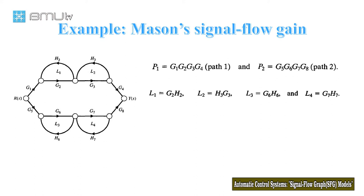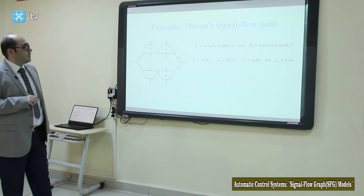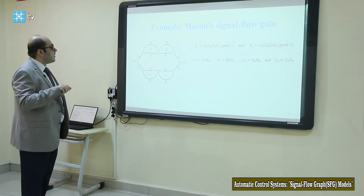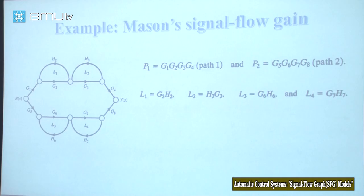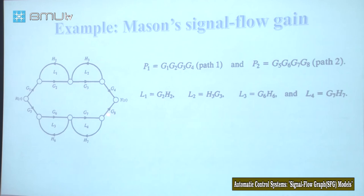Now let's talk about the forward paths. How many forward paths do we have? Looking at this signal flow graph, we can find two different forward paths. The first one has gain G1 × G2 × G3 × G4. The second path starts from G5 and has gain G5 × G6 × G7 × G8, reaching the output. So we have two different forward paths.